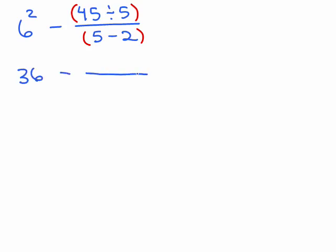but let's simplify the numerator and denominator here. No canceling, can't cancel that 5 into 45 or that 5 into that 5. So, we've got 45 divided by 5, that's 9, and 5 minus 2 in the denominator is 3.